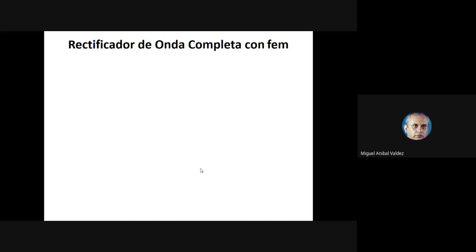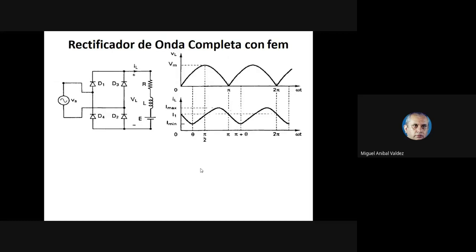Vamos a ver el rectificador de onda completa con FEM. Acá tenemos el rectificador con FEM, la forma de onda de la tensión de salida y la corriente de salida ya en régimen permanente, con un valor I₁ que se repite cada π radianes. Es similar a lo que pasaba antes, pero acá es toda la forma de onda de corriente hecha por la combinación de los diodos: primero D1 y D2, después D3 y D4, en una sola forma de onda.